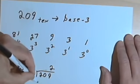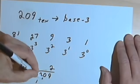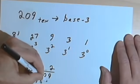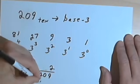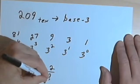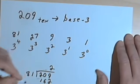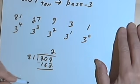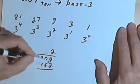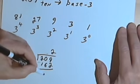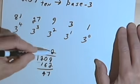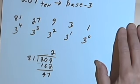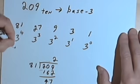2 times 81 is 162, and my remainder is 47. So I'll take the 2 that I got and write that in the 3 to the 4th column.